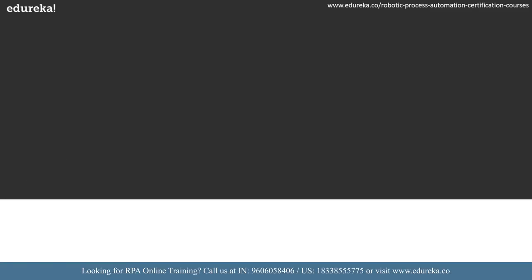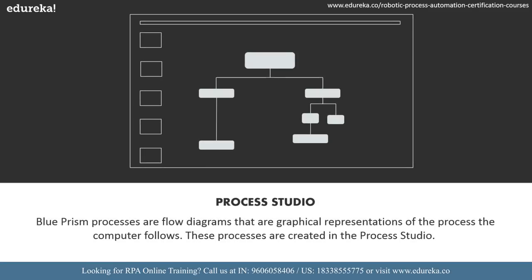Blue Prism processes are basically flow diagrams — graphical representations of the process the computer follows. These processes manipulate data, interact with external applications, and also perform decisions and calculations. These processes are created in the process studio.